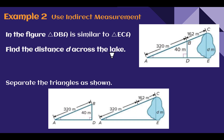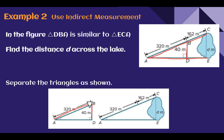Example 2: Use indirect measurement. In the figure, triangle DBA is similar to triangle ECA. Find the distance D across the lake. It would be really difficult to use familiar methods to find a distance across a lake, but with similar triangles we can use indirect measurement. From one side of the lake I have my sight line to the other side — I want to know that distance. Somewhere down the line I can measure between my two sight lines, which forms two triangles. The sight width was 40, and to reach that point I would have gone 320 meters. I have two similar triangles I can use to set up a ratio.